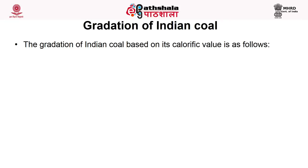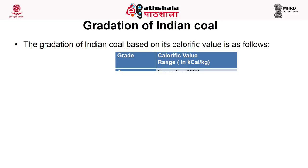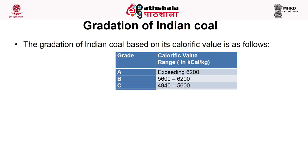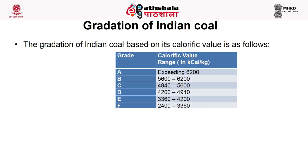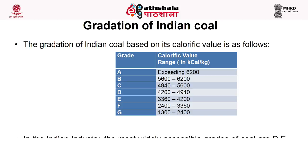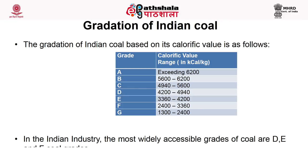The gradation of Indian coal is based on its calorific value. In India, coal is graded into seven grades: A, B, C, D, E, F and G. Grade A has the highest calorific value exceeding 6200 kilocalories per kilogram. Grade B is 5600 to 6200, Grade C is 4940 to 5600, Grade D is 4200 to 4940, Grade E is 3360 to 4200, Grade F is 2400 to 3360, and Grade G is 1300 to 2400. In Indian industry, the most widely accessible grades of coal are D, E and F grades.